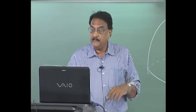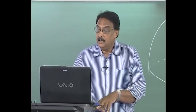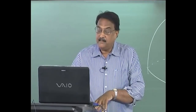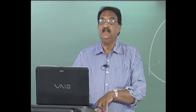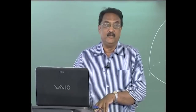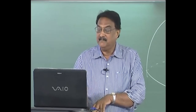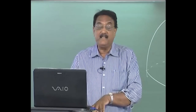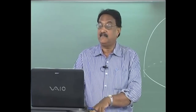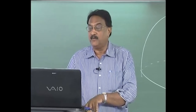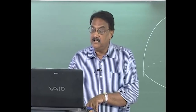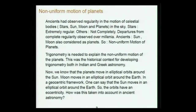This non-uniform motion of planets is at the crux of a lot of developments in astronomy — how they handle the non-uniform motion. Astronomy was the exact science in earlier times, before the fifteenth century, playing the same role as physics in recent times. To explain this non-uniform motion, trigonometry is required. That is the historical context for developing trigonometry both in Indian and Greek astronomy.